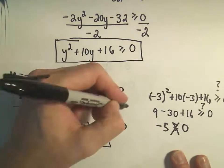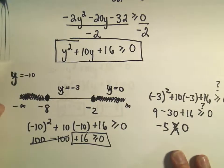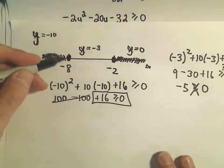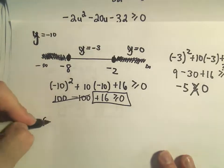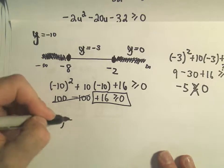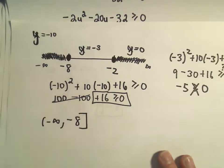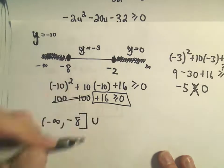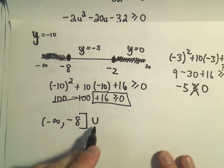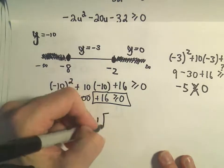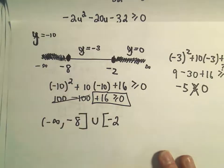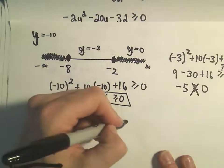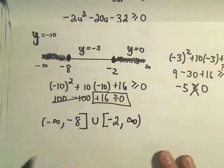If we want to write our solution in interval notation: the shaded numbers on the left are numbers that work, so we go from negative infinity up to and including negative 8. We can use our union sign, and we can use anything starting at negative 2 and including it, up to positive infinity. So the solution is negative infinity to negative 8 bracket union bracket negative 2 to positive infinity.